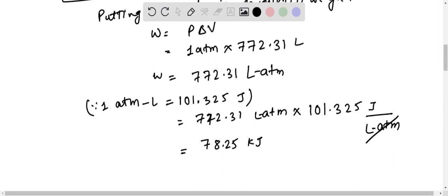This liter ATM, liter ATM cuts off. And we will get 78,254.31075 Joules. In KJ it will be 78.25 KJ. So this is work done.